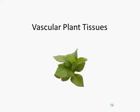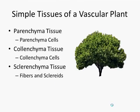Welcome to Quick Biology. In this episode, we're going to cover three basic types of plant cell tissues. The three types of tissues are parenchyma tissue, collenchyma tissue, and sclerenchyma tissue.